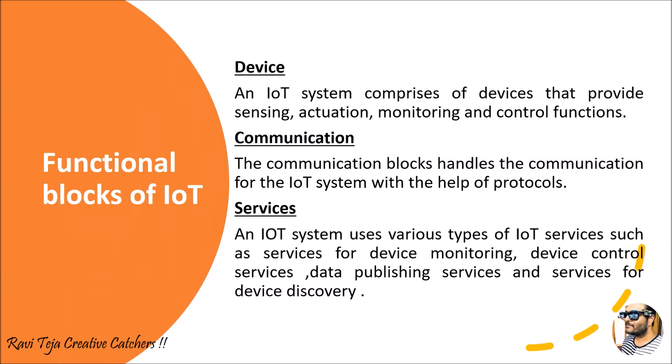First, coming to the device block: an IoT system comprises of devices that provide sensing, actuation, monitoring, and control functions. The devices of IoT will be mostly integrated with sensing technology using several sensors. Actuation can be output modules like motors, gate systems, or other output devices. With the help of sensors, input will be taken and later processed through the internet.